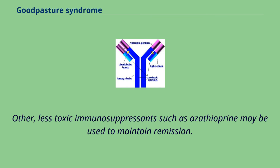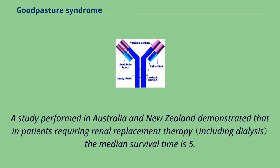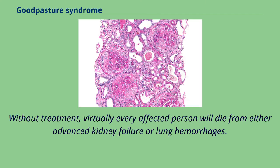Less toxic immunosuppressants such as azathioprine may be used to maintain remission. With treatment, the five-year survival rate is 80% and fewer than 30% of affected individuals require long-term dialysis. A study performed in Australia and New Zealand demonstrated that in patients requiring renal replacement therapy the median survival time is 5.93 years. Without treatment, virtually every affected person will die from either advanced kidney failure or lung hemorrhages.